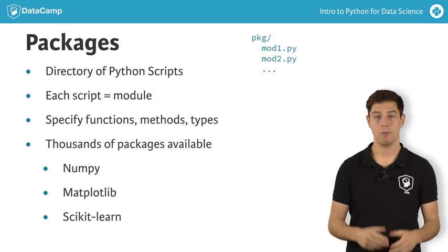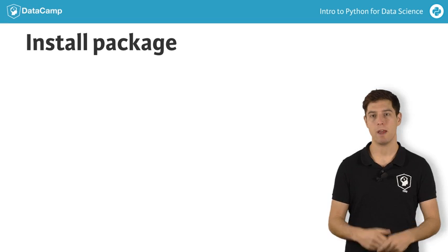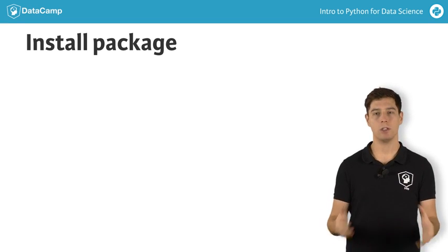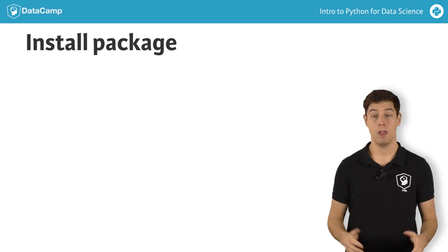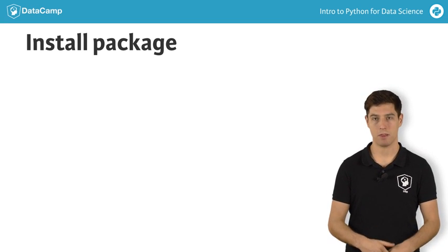To use Python packages, you'll first have to install them on your own system and then put code in your script to tell Python that you want to use these packages. DataCamp already has all the necessary packages installed for you. But if you want to install them on your own system, you'll want to use pip, a package maintenance system for Python.